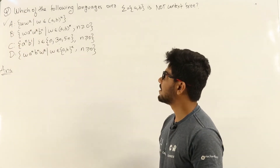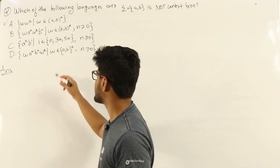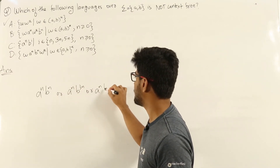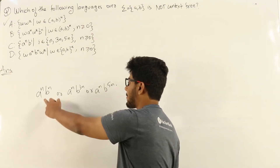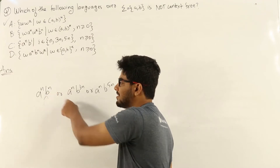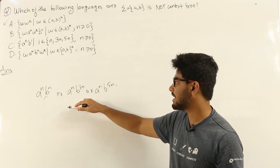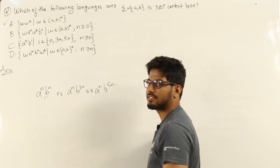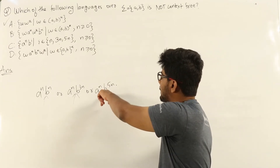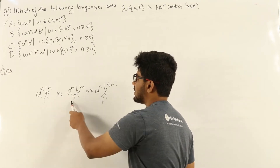Option C: a^n b^i such that i belongs to {n, 3n, 5n}. This is the union of a^n b^n, a^n b^3n, and a^n b^5n. We can create pushdown automatas for each: for a^n b^n, push all a's then pop one per b; for a^n b^3n, push three a's per input a then pop one per b; for a^n b^5n, push five a's per input a then pop one per b. The union of three context-free languages is always context-free, so this is also context-free.